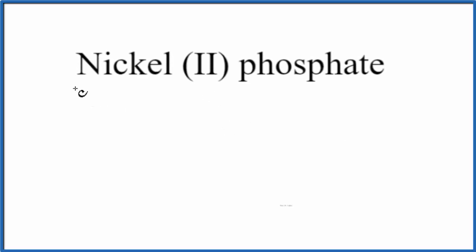In this video we'll write the formula for nickel(II) phosphate. For nickel on the periodic table, the element symbol is Ni. The Roman numeral II tells us we'll have a 2+ ionic charge on the nickel here in this nickel(II) phosphate.